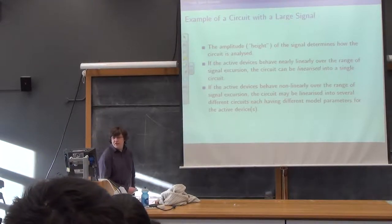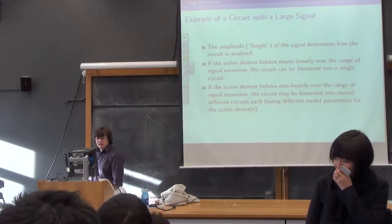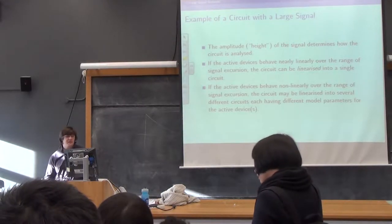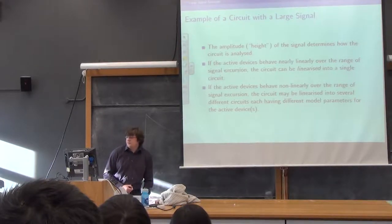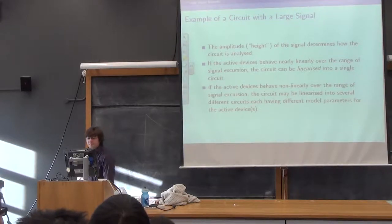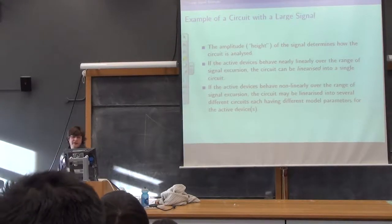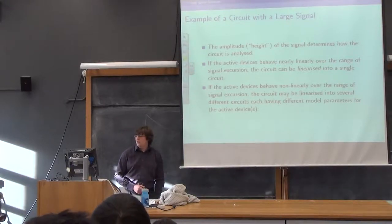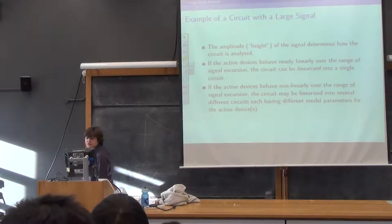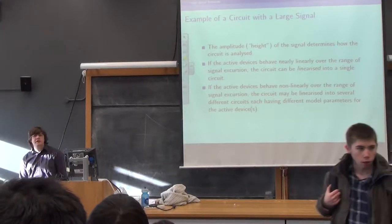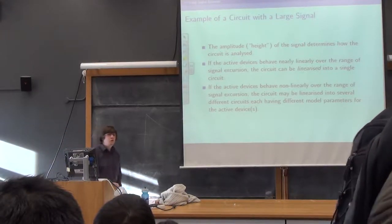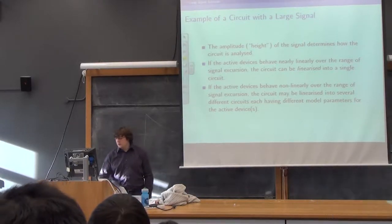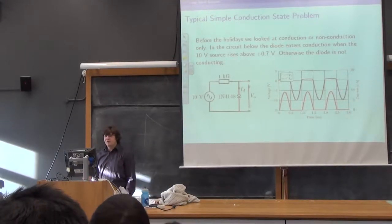Let's look at an example of a circuit with a large signal. The amplitude or height of the signal determines how the circuit is analysed. If the active devices behave linearly — or nearly linearly — over the range of signal excursion, then we can call our large signal circuit a single small signal circuit. If the active devices behave non-linearly over the signal excursion, we can still linearise the circuit, but we'll have to do so into two or more circuits, each representing one state of the active devices.